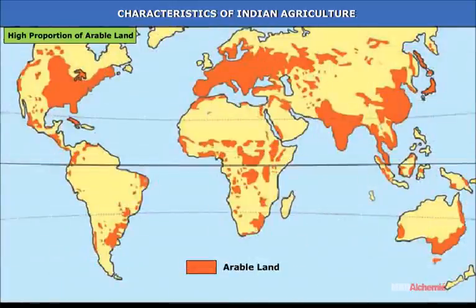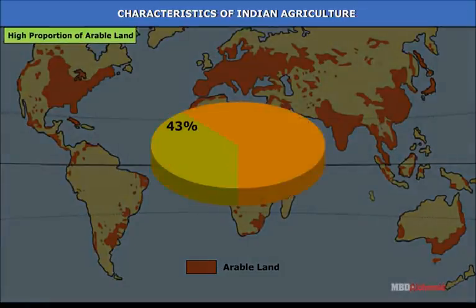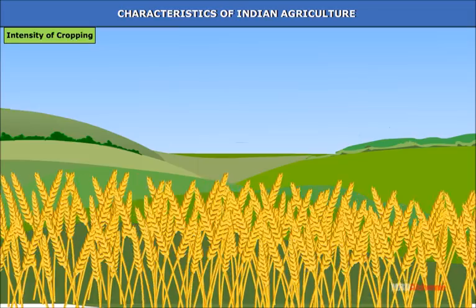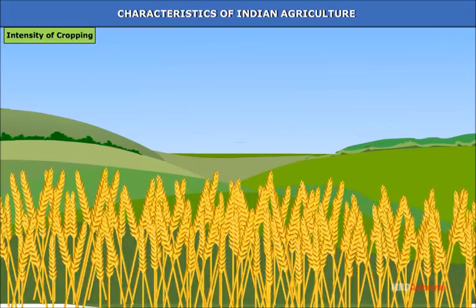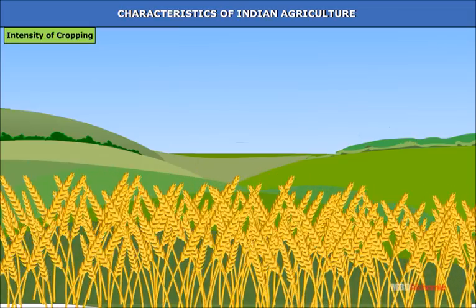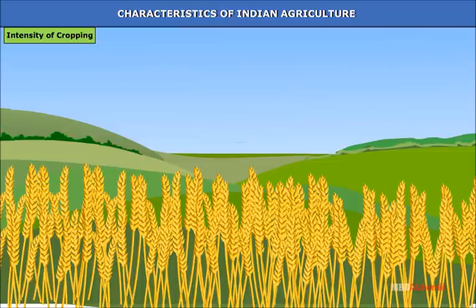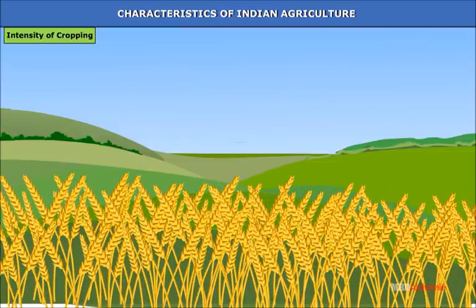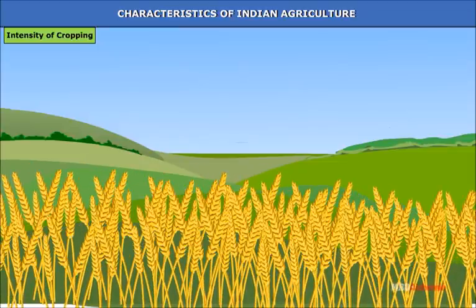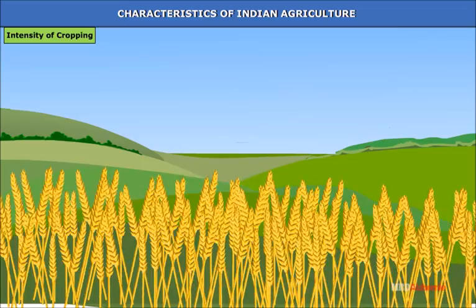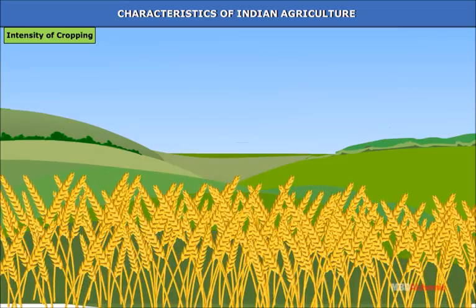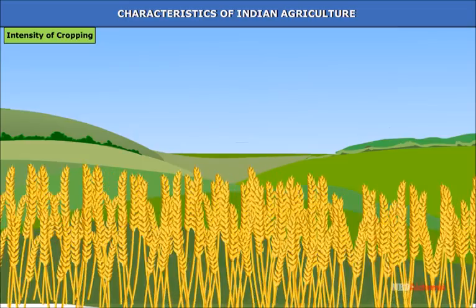High proportion of arable land: India has a high proportion of arable land — about 43%, the highest in the world. Intensity of cropping: In India, on account of tropical climate and longer hours of daylight, multiple cropping patterns prevail, making high intensity of cropping a phenomenon of Indian agriculture.